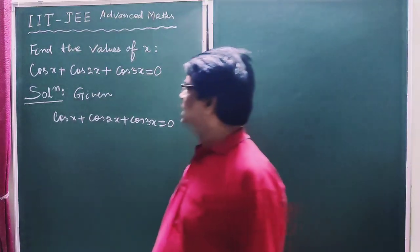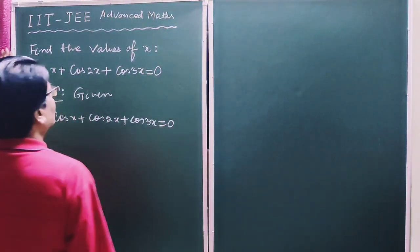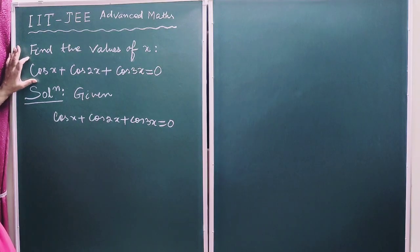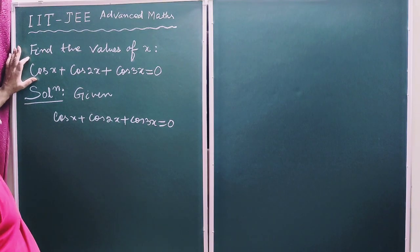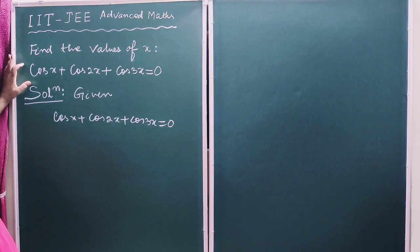Hello students, let us solve a trigonometric equation and we have to find the value of x. Given cos x plus cos 2x plus cos 3x is equal to 0.